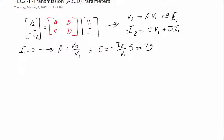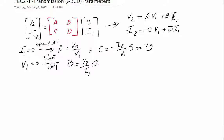Another possibility is if port one is open and port two is shorted. In this case, if V1 is equal to zero, then we can find B as V2 over I1 — the unit is volts over amps, so it must be ohms. And we can find D as minus I2 over I1, which is unitless.